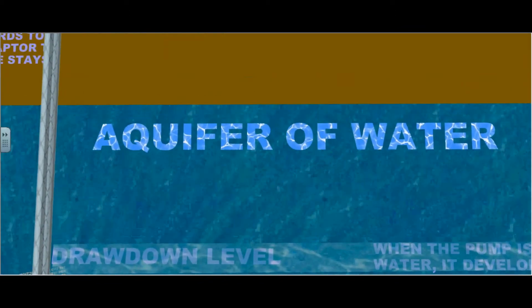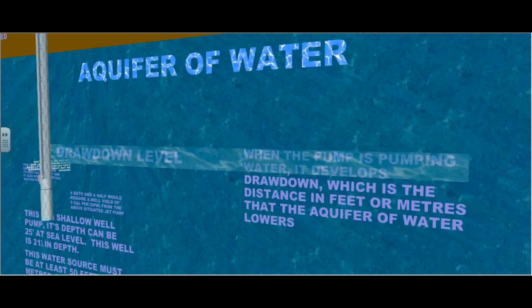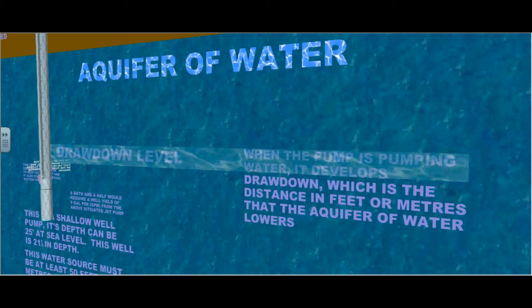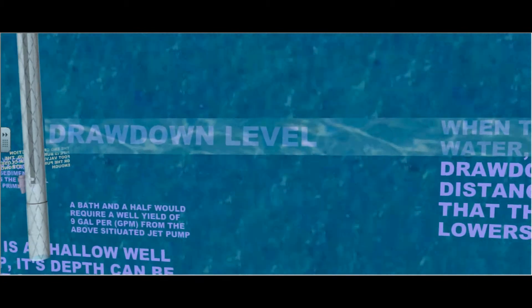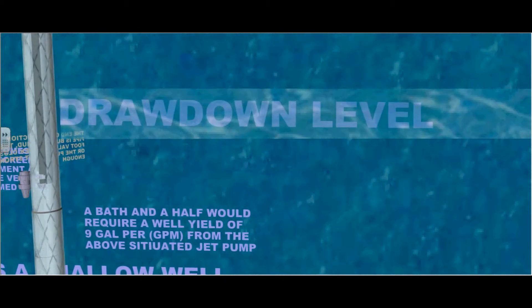This is an aquifer of water. When the pump is pumping water, it develops drawdown which is the distance in feet or meters that the aquifer of water lowers. It actually develops a cone which goes down to the drawdown level which must be above the foot valve.